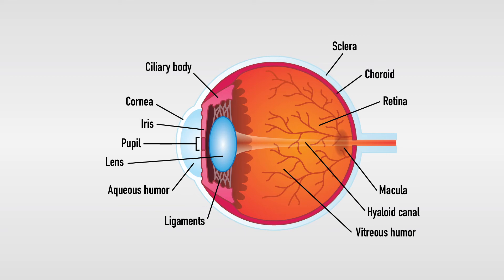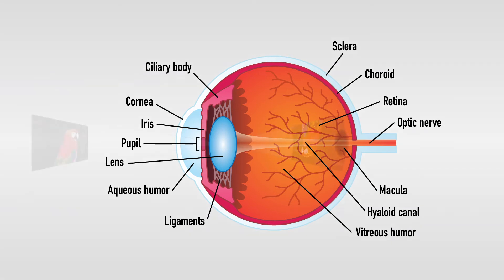Choroid: it is located behind the retina and nourishes it through a vascular network. Optic nerve: the optic nerve sends the inverted image captured by the eyes to the brain. Then, the brain interprets the image.